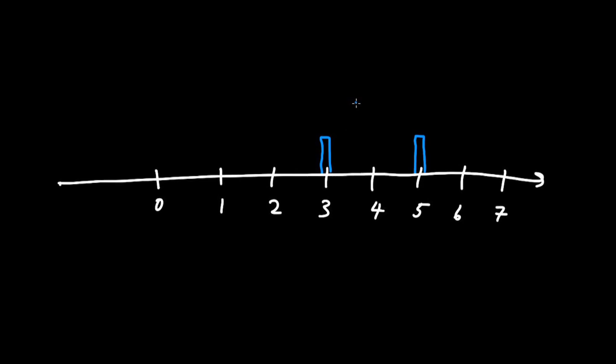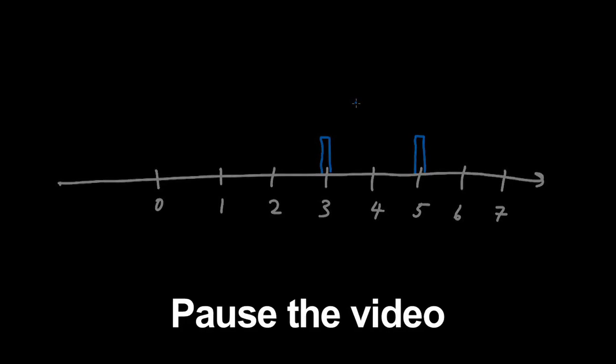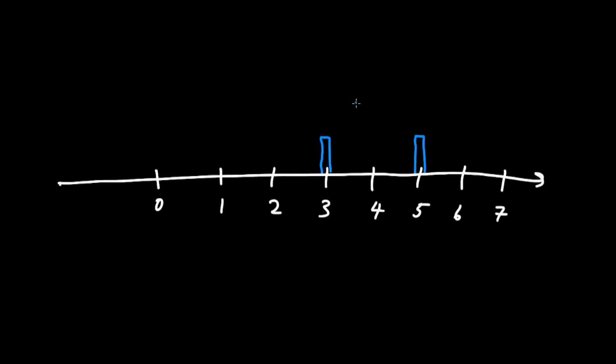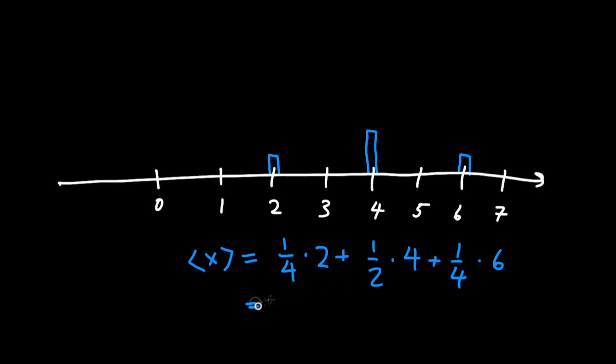Pause the video here and find the expected value after one more tick, that is, two ticks after it was known to be at 4. You should have found that the expected value is still 4. Here is the probability distribution. It has a one-fourth chance to be at 2, a one-half chance to be at 4, and a one-fourth chance to be at 6. Thus, the expected value of x is one-fourth times 2, plus one-half times 4, plus one-fourth times 6, which equals 4.